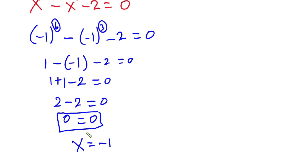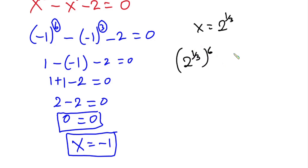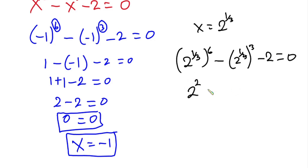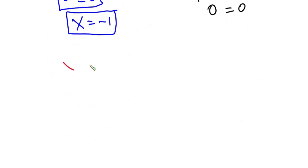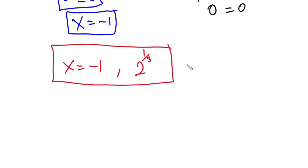When x equals 2 to the power one third: 2 to the one third, all to the sixth power, minus 2 to the one third, all to the third power, minus 2. This gives 2 squared minus 2 minus 2, which is 4 minus 4 equals zero. Confirmed. So the final real solutions are x equals negative 1 and x equals 2 to the power one third. I hope you found this video useful — please give it a thumbs up and subscribe to the channel!